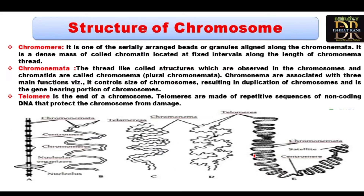Chromosomes are composed of chromomeres — serially arranged bead-like granules aligned along the chromonema. These are dense bodies of chromatin at fixed intervals. The chromonema are thread-like coiled structures observed in chromosomes. They are associated with three main functions: controlling chromosome size, enabling chromosome duplication, and bearing the genes.